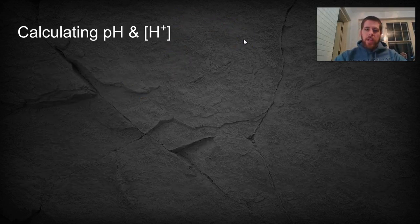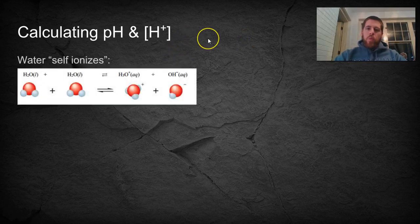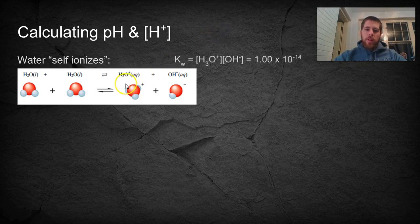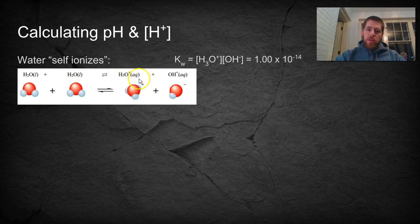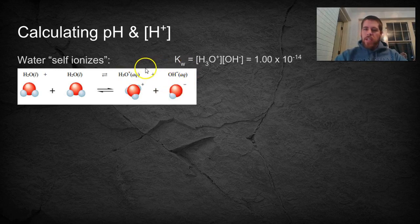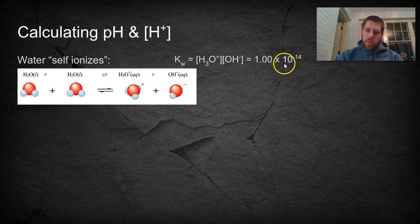Let's start with calculating pH and H+ concentration. Water self-ionizes. So even if you have completely pure water, there's still a fraction of the water molecules that are at equilibrium with H3O+. This is called the hydronium ion and OH-, the hydroxide ion. One thing to keep in mind is that H3O+, the hydronium ion, is often written as just H+. They're interchangeable. It just so happens that the concentration of these two ions in pure water, when you multiply them, you get exactly 1 times 10 to the negative 14th.